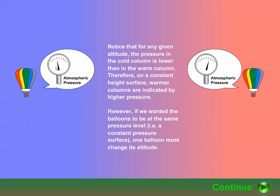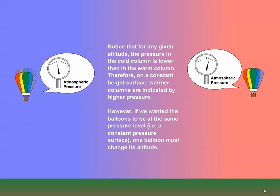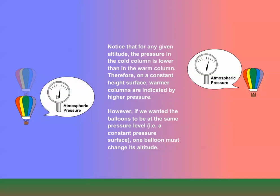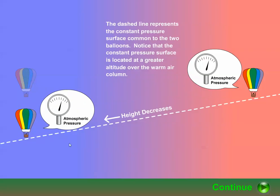However, if we wanted the balloons to be at the same pressure, one balloon must change its altitude. The balloon in the colder air column sinks so that it's now located at a level with an equal pressure to that of the balloon in the warmer column. This dashed line represents the constant pressure surface common to the two balloons. Over the warmer air column, the constant pressure surface is located at a higher altitude than over the colder air column.